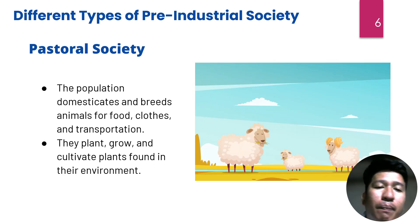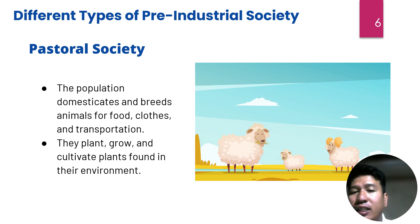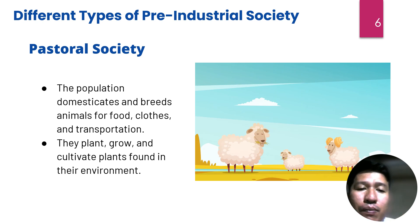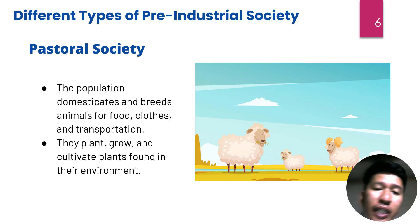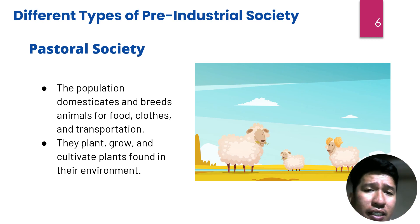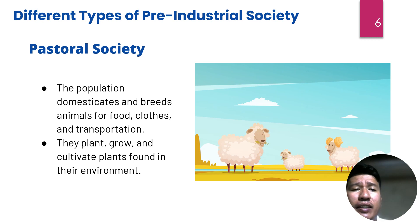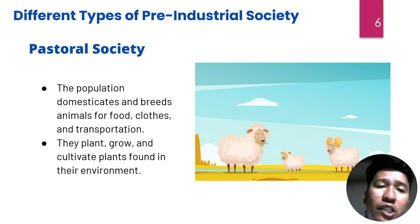The second type is pastoral society. The population domesticates and breeds animals for food, clothing, and transportation, and also cultivates plants found in the environment. Pastoral society is another type of pre-industrial society. What other characteristics do pastoral societies have? Can you imagine what life is like in this society?